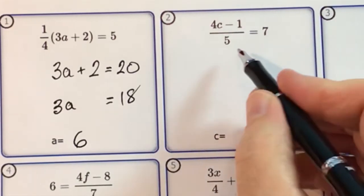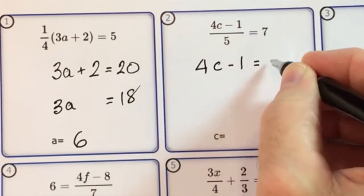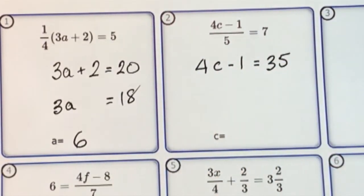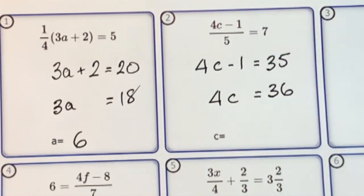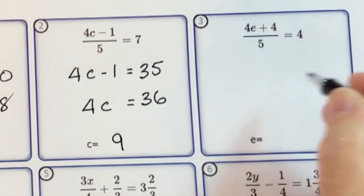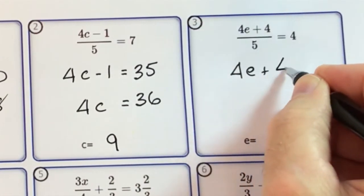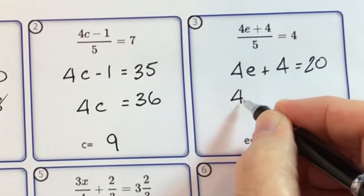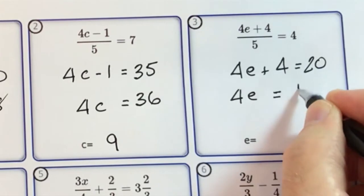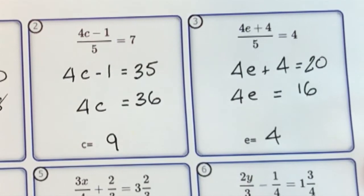Next question: multiply both sides by 5, so 4c minus 1 equals 35. Then add 1 to both sides, giving 4c equals 36. Divide both sides by 4, so c is equal to 9. For question 3, multiply both sides by 5: 4e plus 4 equals 20. Subtract 4 from both sides, leaving 16. Divide both sides by 4 and e equals 4.